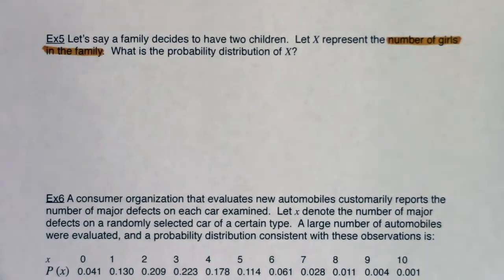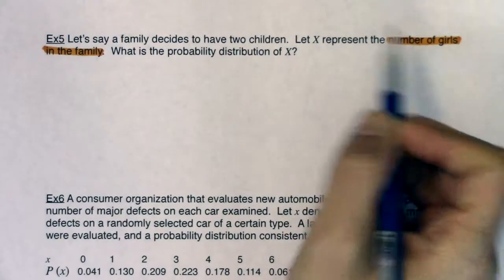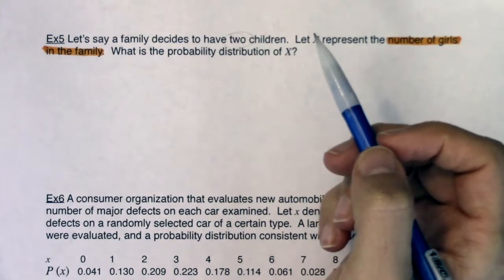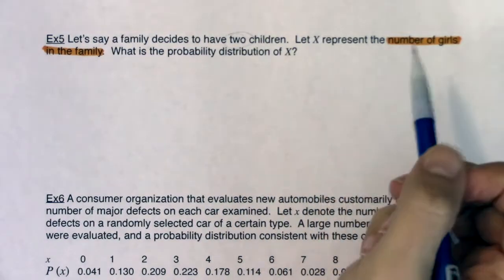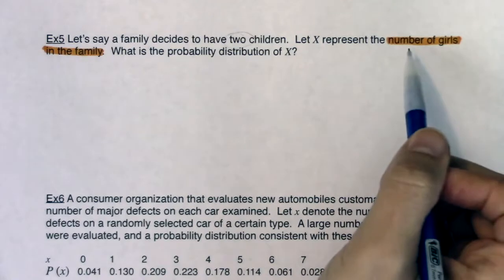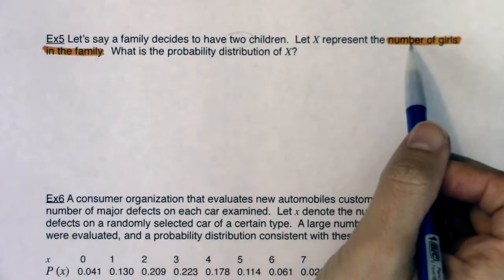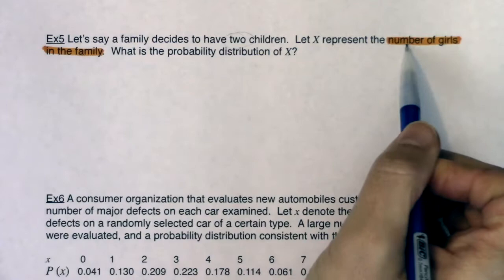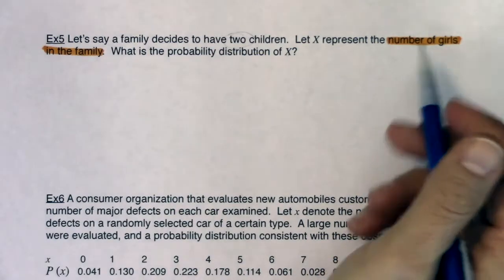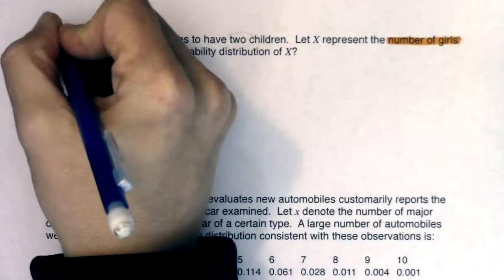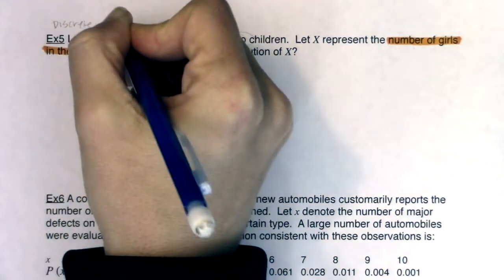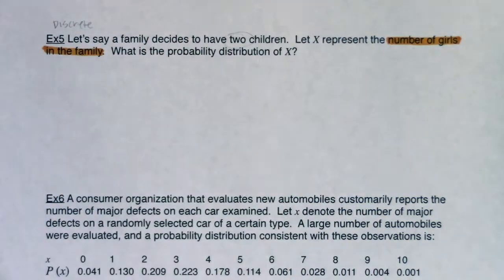We've got the number of girls in a family, and we're going to have two children. We're going to just pretend that gender is binary for right now. Would I count the number of girls, or would I measure the number of girls? I would count them. So we do have a discrete variable — and again, it's chapter four, so it'll always be discrete — but let's think about what the sample space would be.